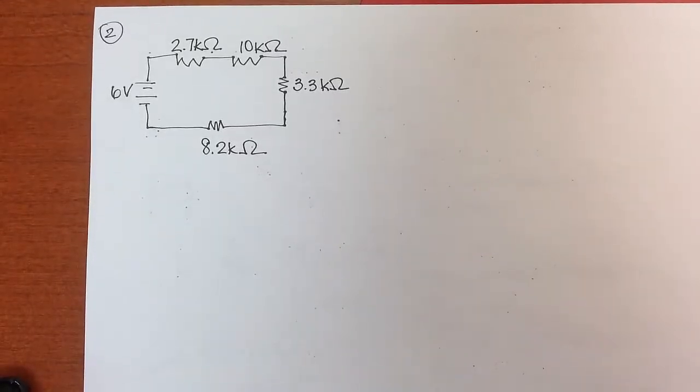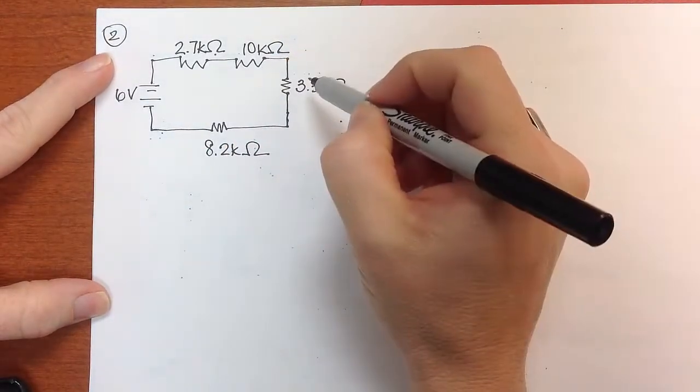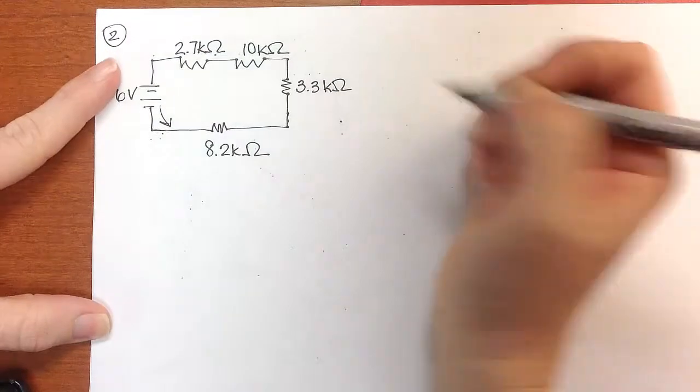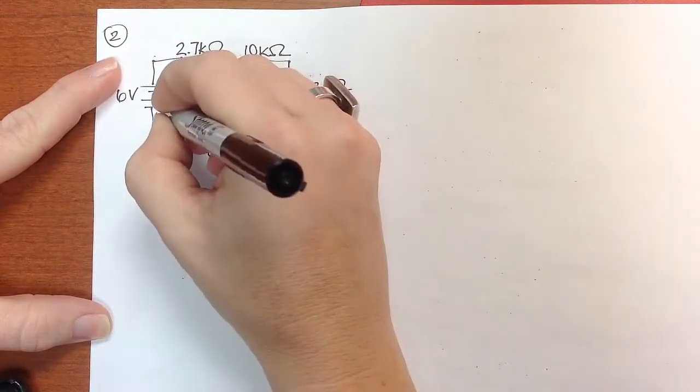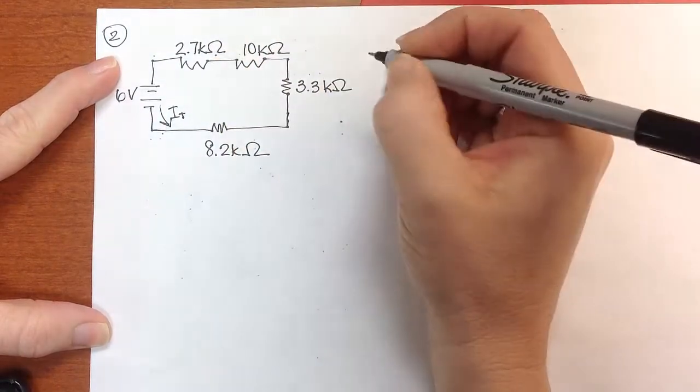This is the second practice problem. Let's look at it. I have four resistors, all in series. The current in this circuit, all of the current is going to go through every component, so I total is going to go through every component.